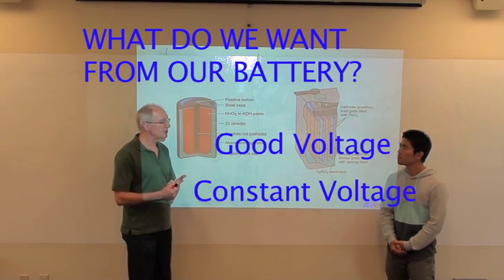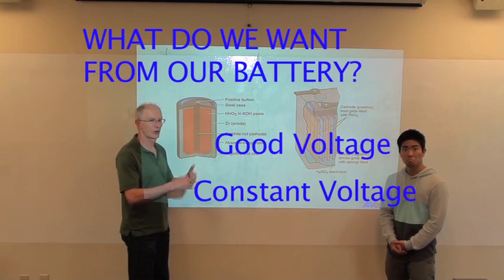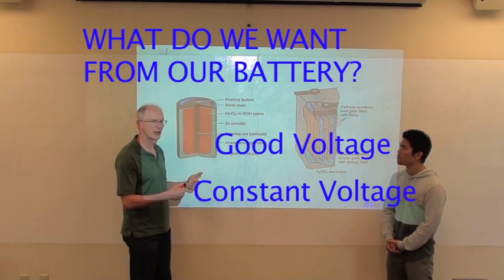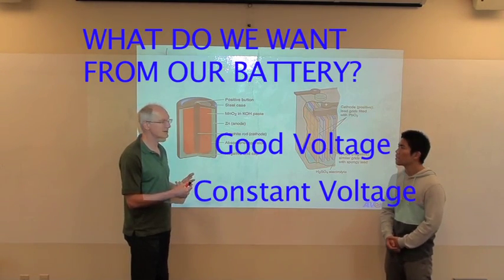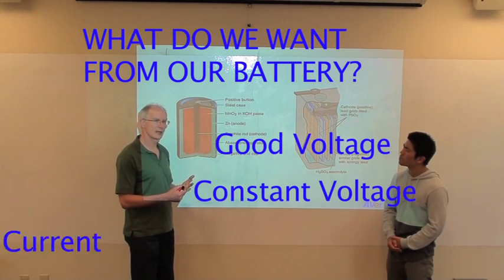We want something where the voltage doesn't change as the chemical reaction proceeds. That's getting around the Nernst equation. How do we do that? We want something that has a lot of current.